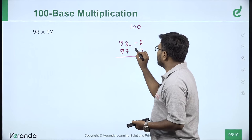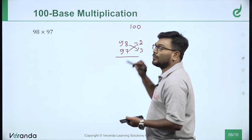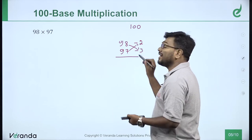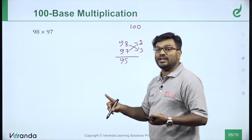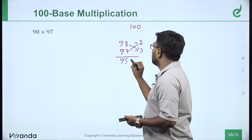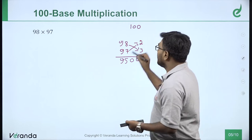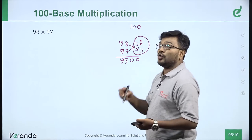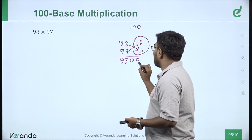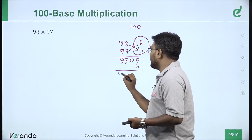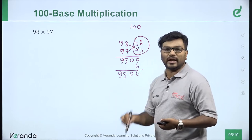Using cross multiplication: 98 minus 3 or 97 minus 2 gives 95. 95 into base, 95 into 100 equals 9500. Second step: multiply the differences. Minus into minus equals plus, 2 times 3 equals 6, so add 6 to get 9506.